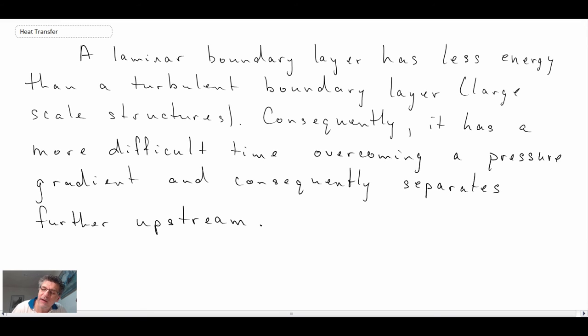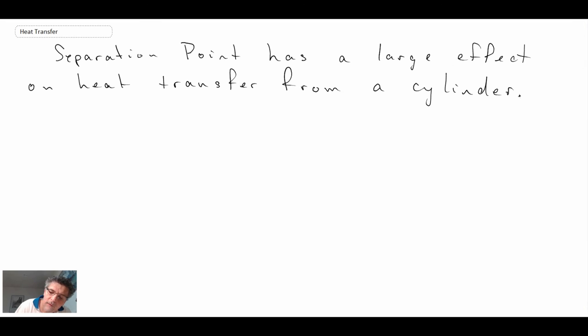So the implications of all of this, in terms of heat transfer, and that's what we're interested in, the main thing is that separation, a separation point, has an impact on the convective heat transfer coefficient on a cylinder. And so with that, you can expect that the heat transfer characteristics of the cylinder will be dependent upon the Reynolds number of the flow over the cylinder.